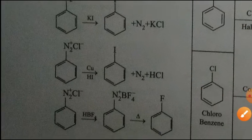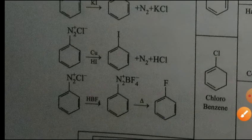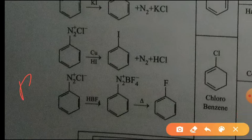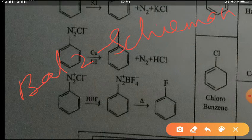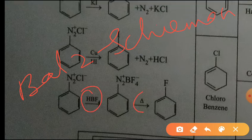When you react diazonium chloride with copper and HI you get iodobenzene. For the preparation of fluorobenzene, the Balz-Schiemann reaction is used: react benzene diazonium chloride with HBF₄, then heat it, and you get fluorobenzene.